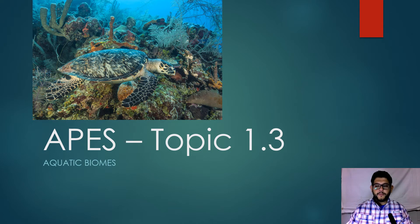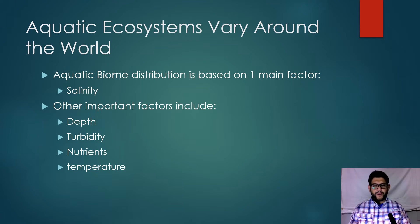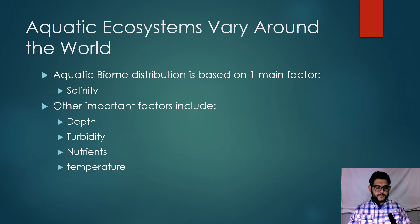Hi guys, this is Mr. V and welcome to the APES review video. This is Topic 1.3: Aquatic Biomes. In aquatic ecosystems, one thing to understand is that a biome is kind of based on land, so that's not a great name, but it's still okay. One of the main factors in all aquatic ecosystems or biomes is salinity — salinity is the amount of salt content.